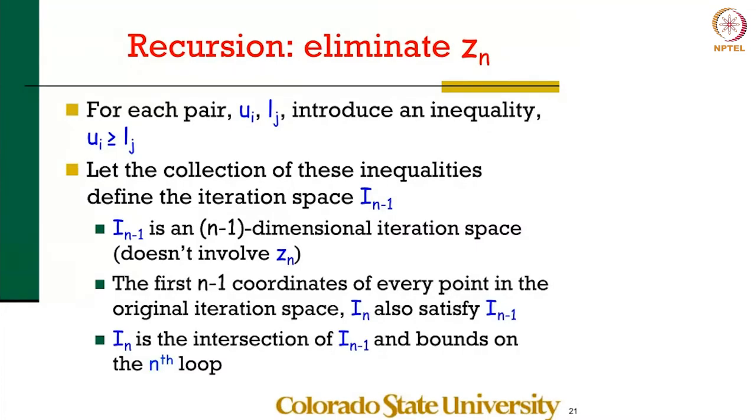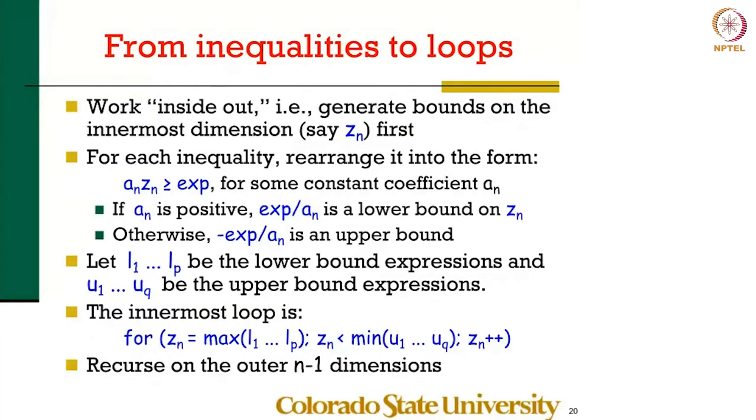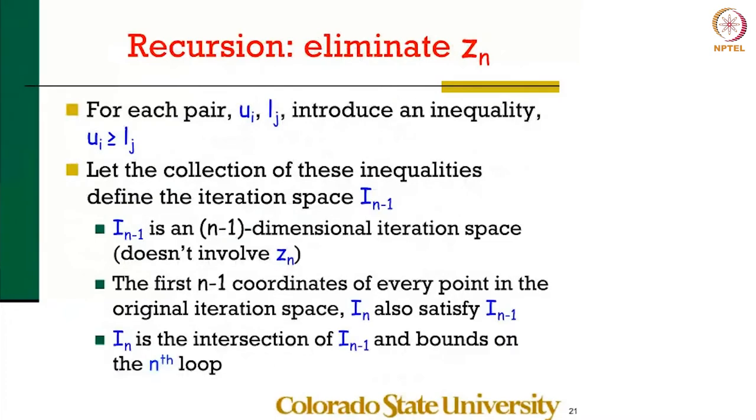So why does this work? The original polyhedron can be viewed as the set of points that satisfy all these inequalities intersected with the set of points in the n minus 1 dimensions with no bounds on z_n that involve these inequalities.